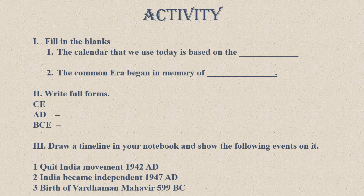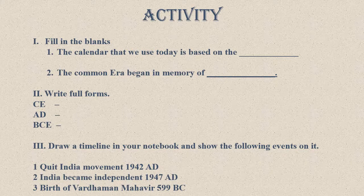Second question: Write the full form. CE stands for Christian Era or Common Era. AD stands for Anno Domini. BCE stands for Before Common Era, or also Before Christian Era.